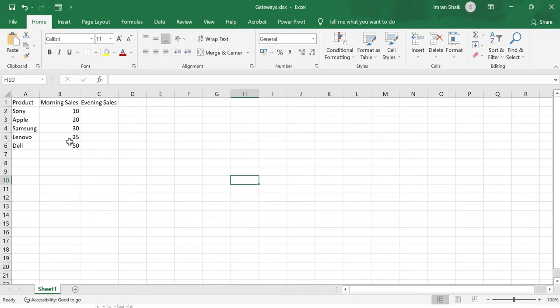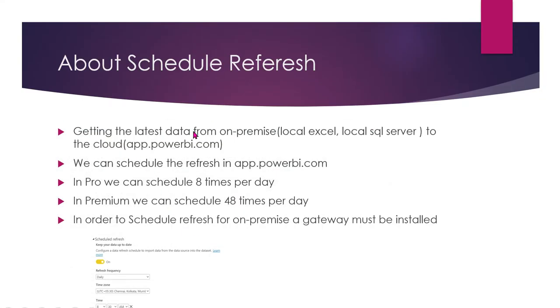You can schedule the refresh at app.powerbi.com. In Pro license you can schedule 8 times per day; in Premium you can schedule 48 times per day. In order to schedule refresh from on-premise data, the gateway must be installed. Let's check the demo.